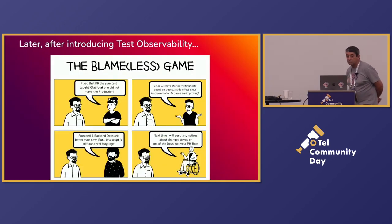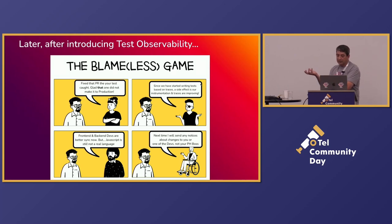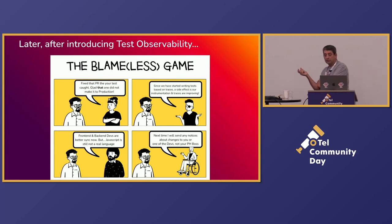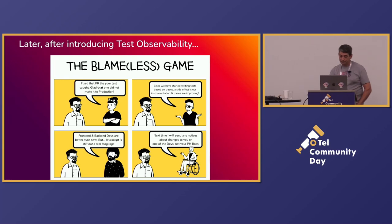So after introducing test observability, I don't know that we have a totally blameless system, but hopefully there's less blame going around. One thing I've seen with implementing observability in tests is everybody starts caring about the trace — it's not just for the SREs, it's for the developers too. If they start writing tests based on traces, they start caring about traces, and the traces get better, which helps the SREs. And JavaScript's still not a real language.